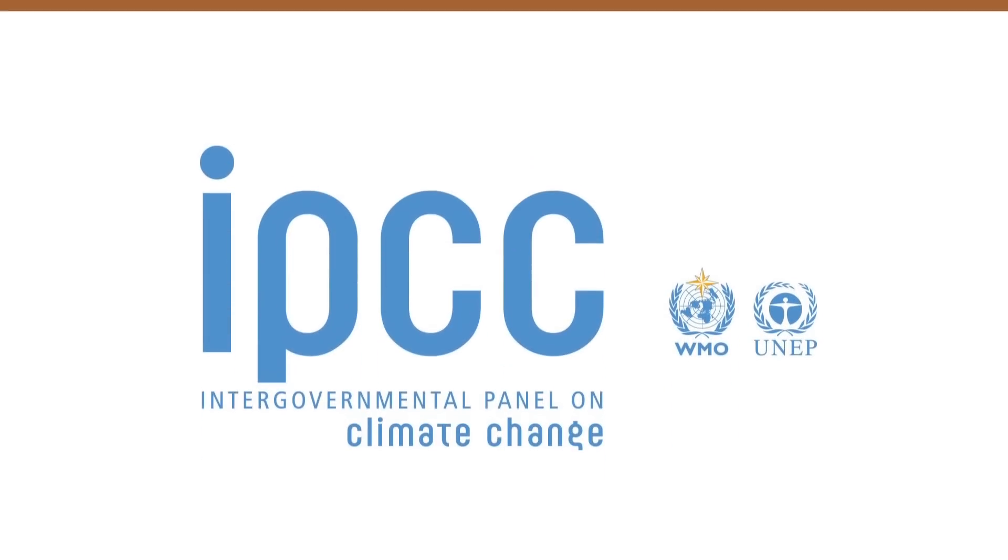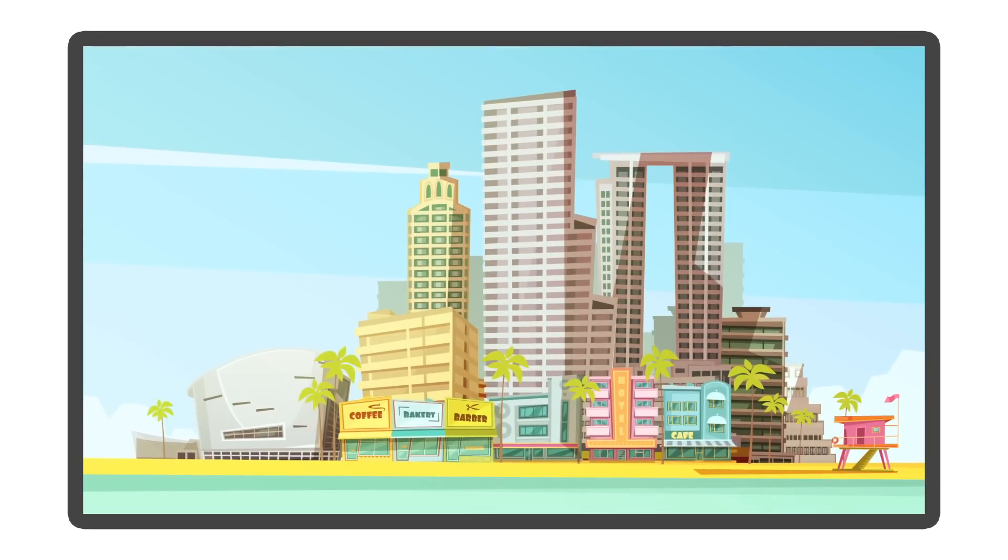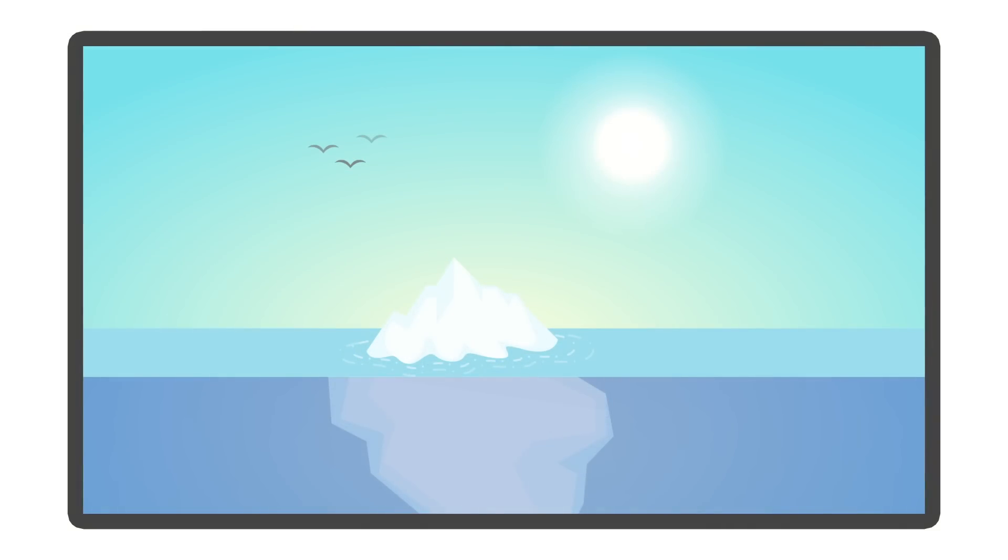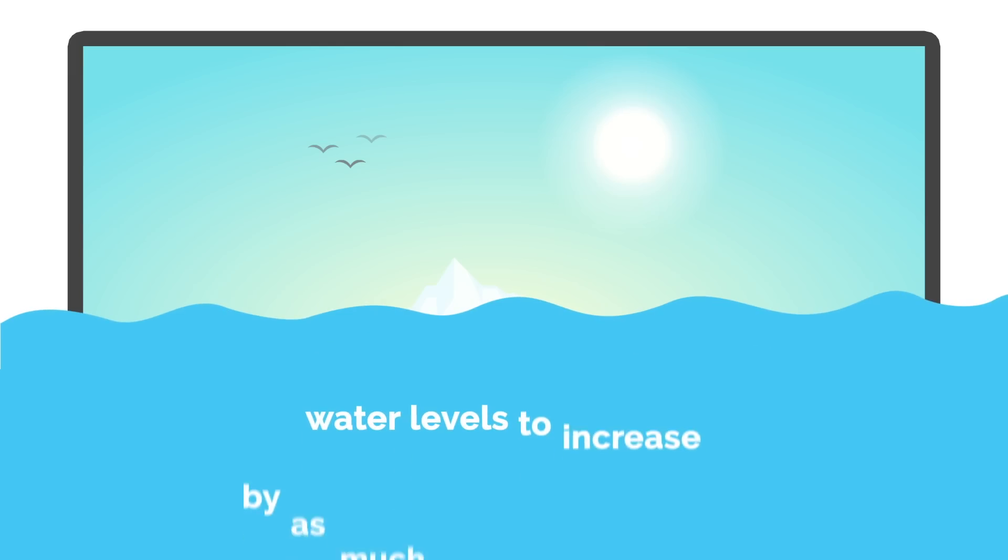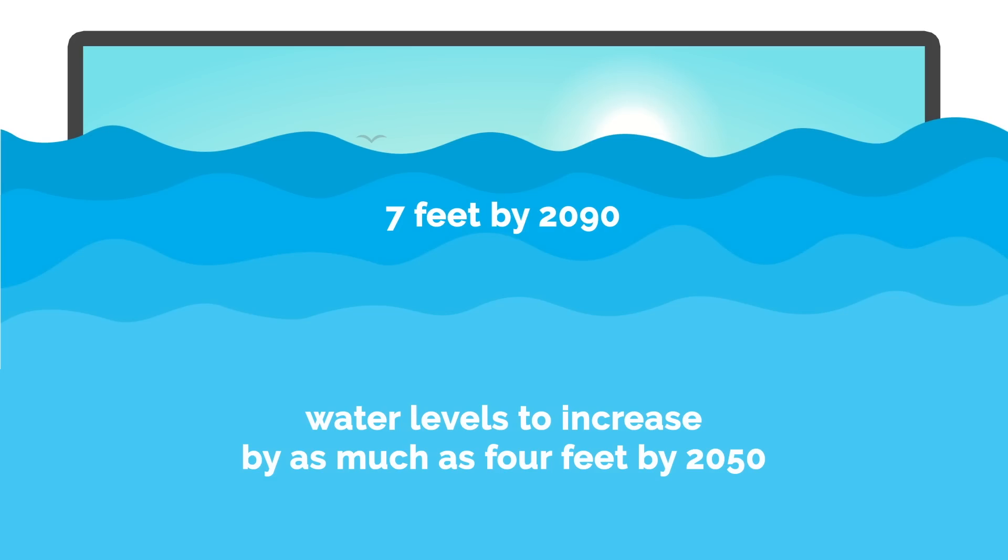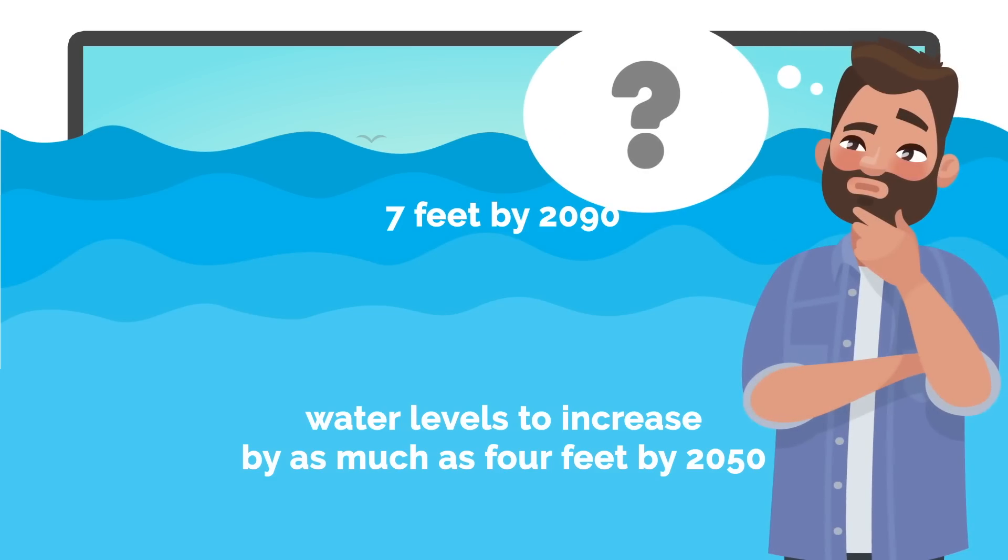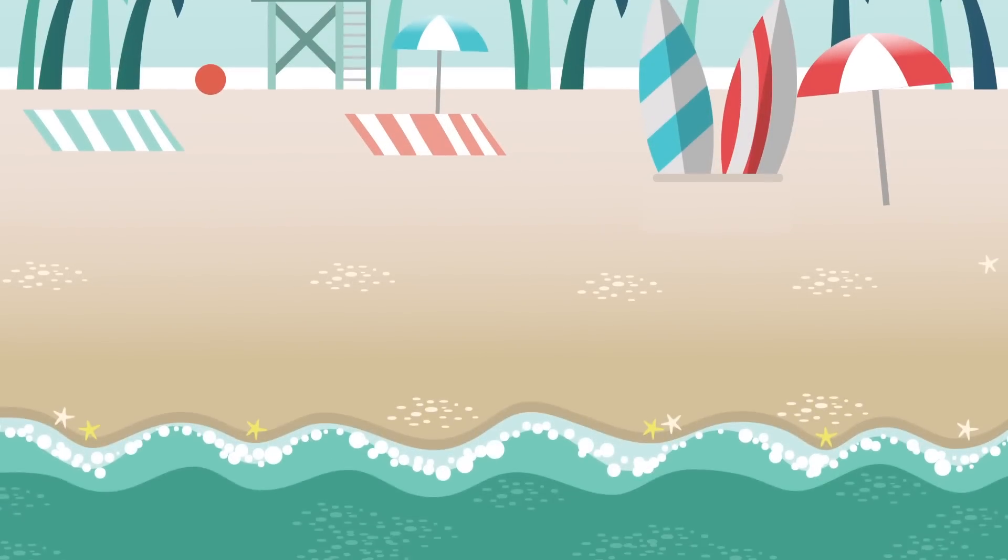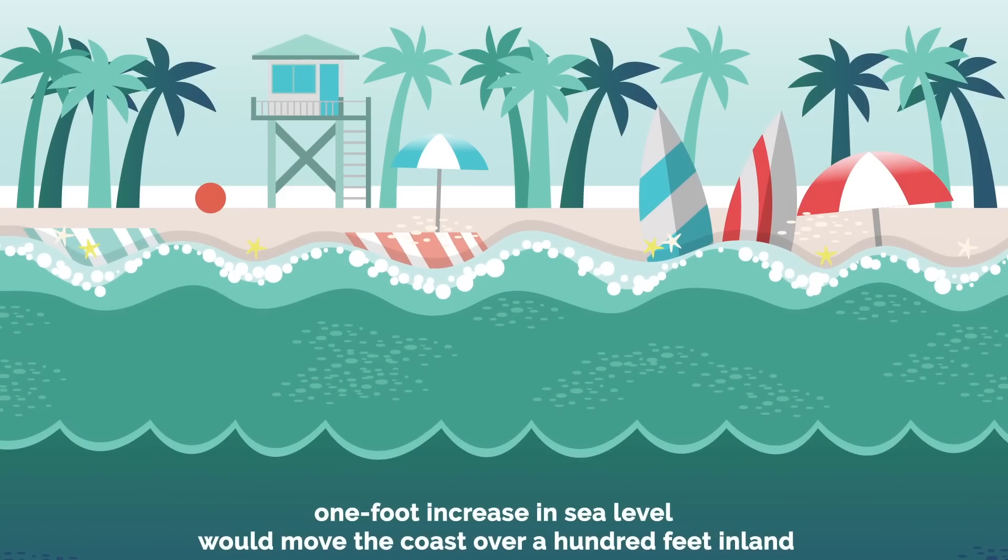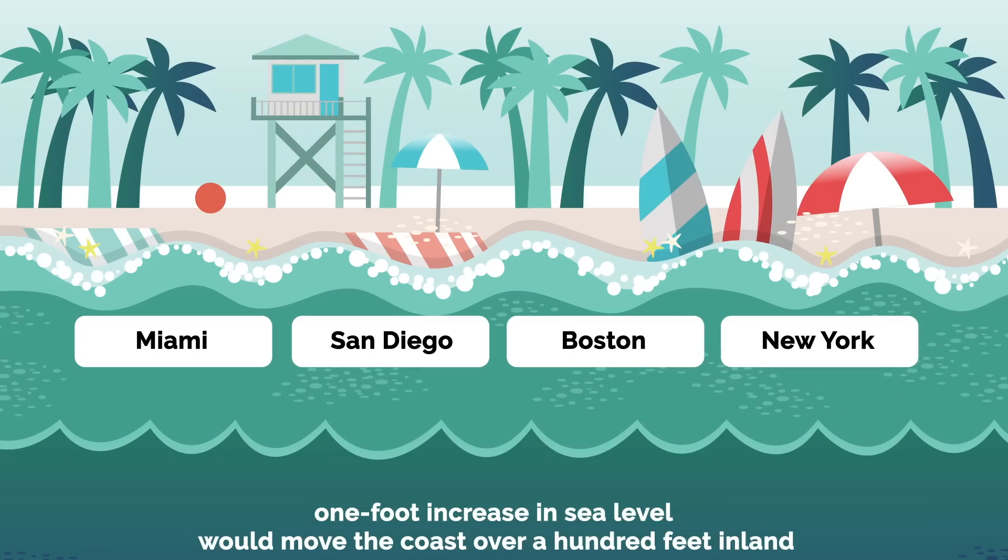Coastal Flooding. According to the IPCC, many coastal cities may be underwater sooner than you think. As the poles continue to melt, global sea levels will rise dramatically. The IPCC predicts that water levels will increase by as much as 4 feet by 2050, and 7 feet by 2090. Now, this may not seem like much at first. But consider this. In Honolulu, Hawaii, a one-foot increase in sea level would move the coast over 100 feet inland. That means that most of the beaches, docks, and resorts would be completely flooded. Other major cities, like Miami, San Diego, Boston, and New York City, will likely suffer the same fate.